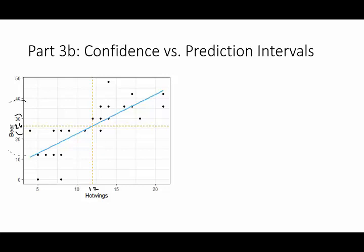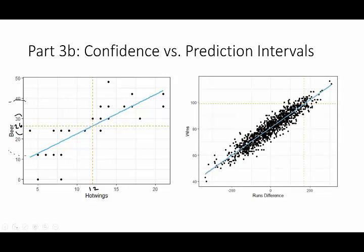In the baseball example, one of the questions from the introductory video was: if the Oakland A's score 169 more runs than their opponents, the least squares line predicts 99 wins for the season. How confident can we be in that result? What's the margin of error, and what confidence interval can we put on the number of wins given a run difference of 169?